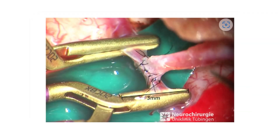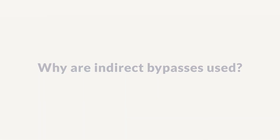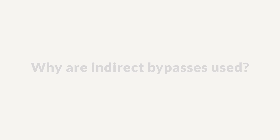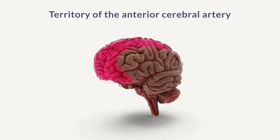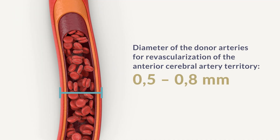This direct connection allows more blood to flow from the time of the surgery. Indirect bypasses are very often used to supply blood to the frontal areas of the brain. In this case, either the donor artery or the recipient artery of the brain is simply too small for direct suturing — with diameters of less than 0.5 to 0.8 millimeters. The most commonly used indirect procedure is the so-called EDAS, where the two arteries are placed side by side. We still don't fully understand how it works, but over the next few weeks and months, the body manages to connect the two vessels and more blood flows over time.